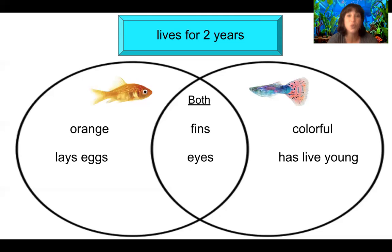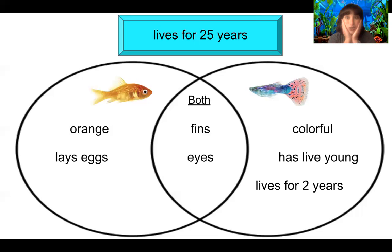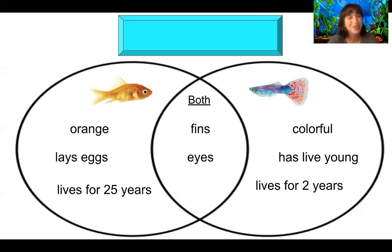Let's see our next word: lives for two years. Do you remember which fish lives for two years? If you said guppies, you are correct. They're beautiful fish who usually live for two years. Let's see what the next sentence is going to say: lives for 25 years. Whoa! Point right now — which one lives for 25 years? If you said goldfish, you are correct. Goldfish normally live for five to ten years in a fish tank, but in the wild they can live up to 25 years.